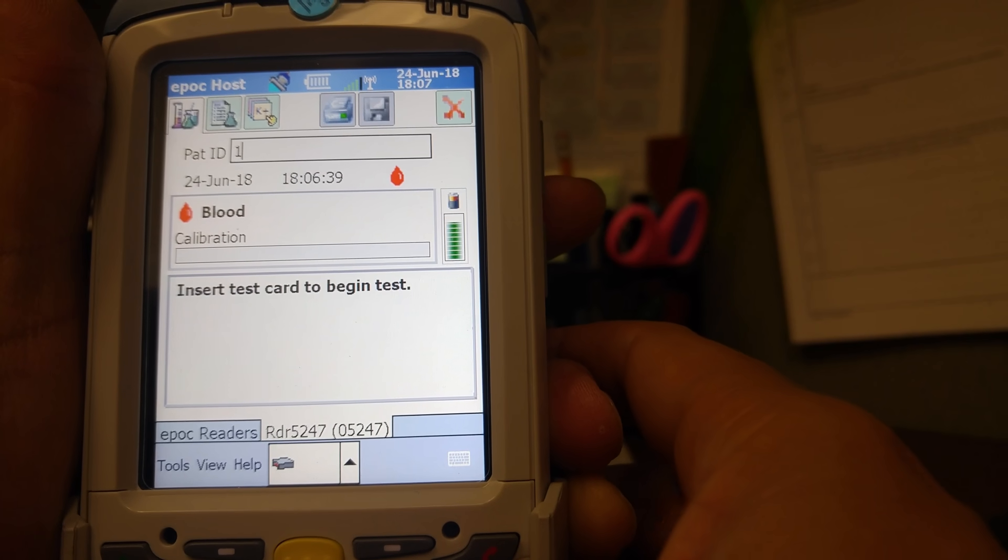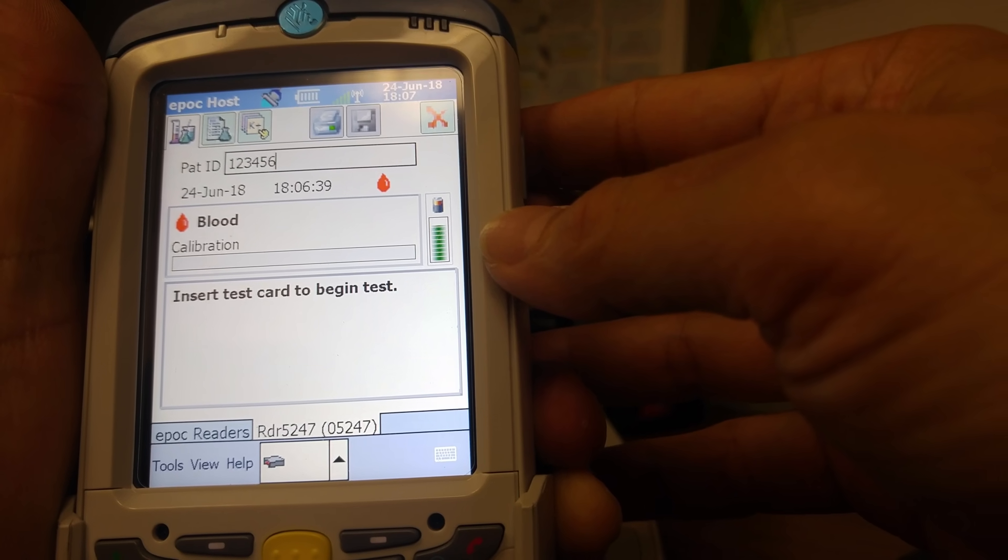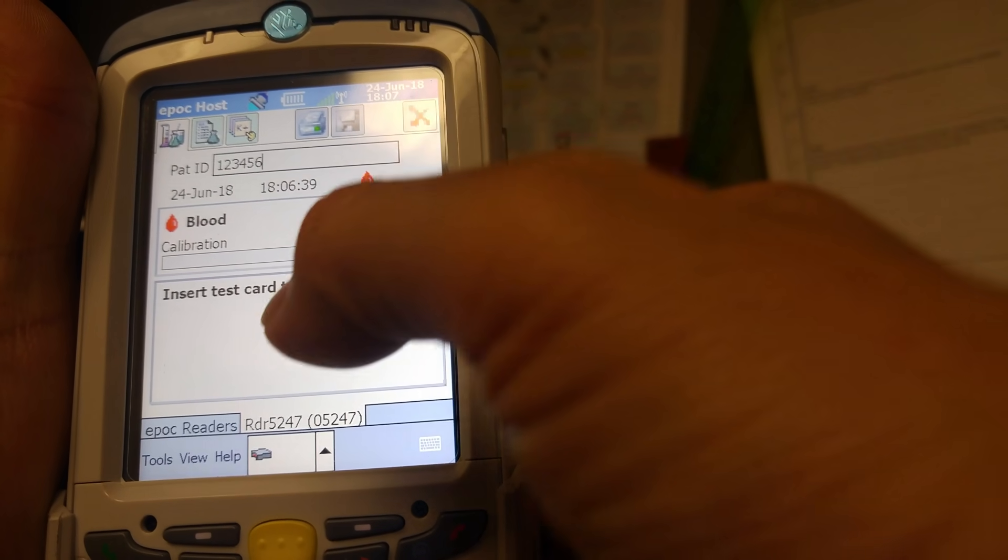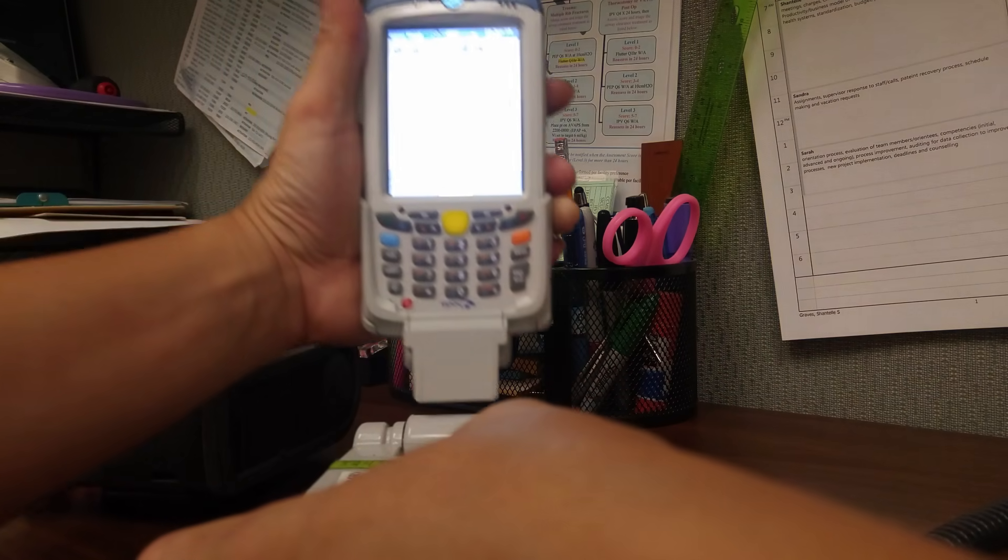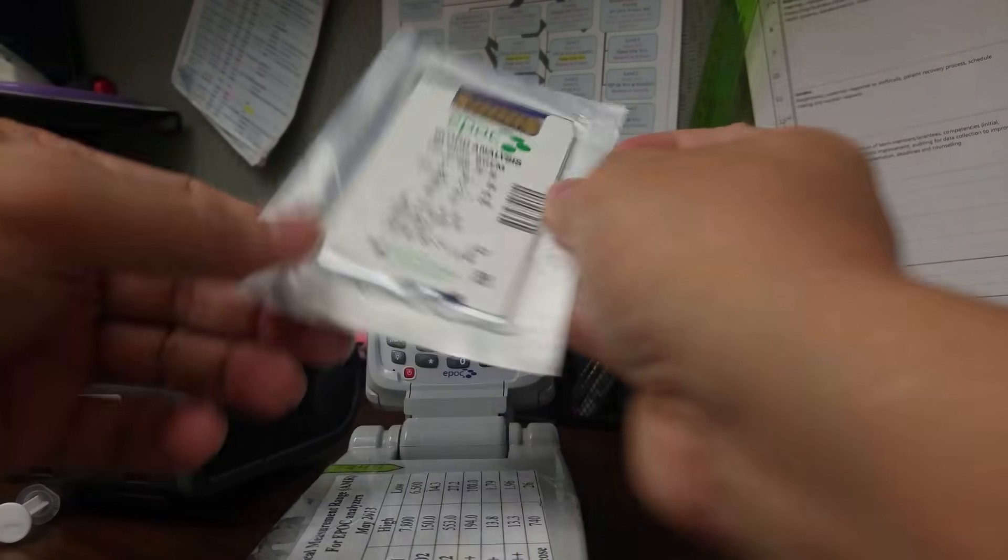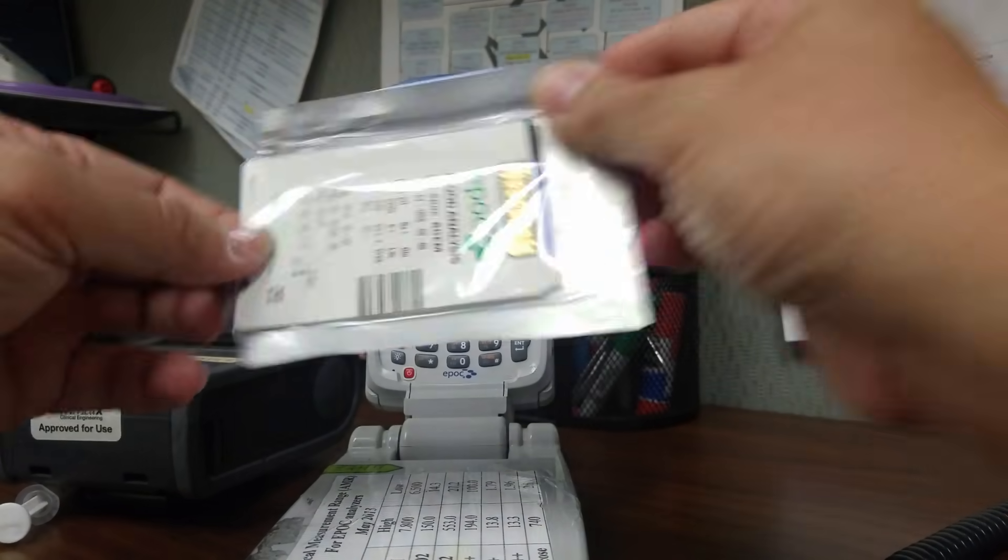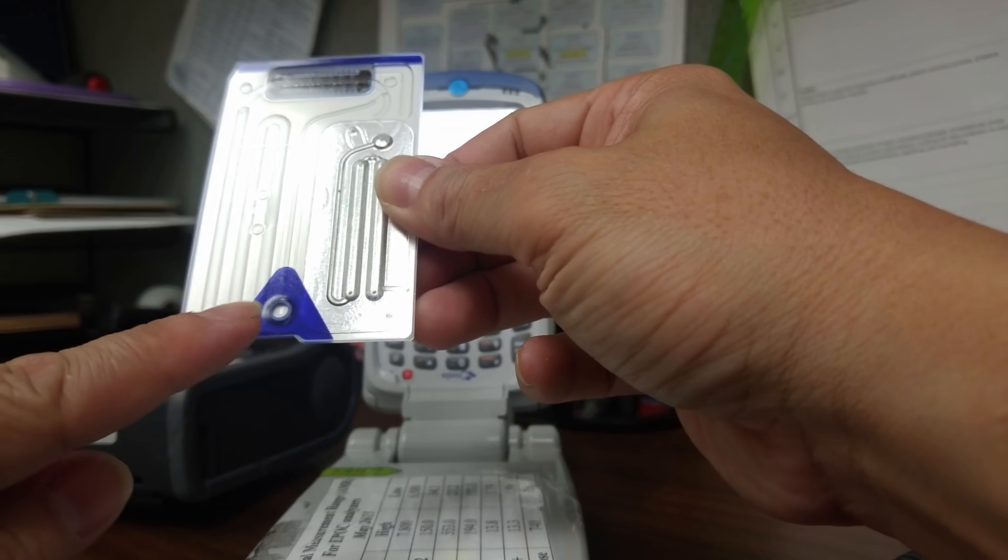You've got to get a card out. This is a card, the EPOC card. So get one out. You want to turn it around. This is where you're going to put the sample.